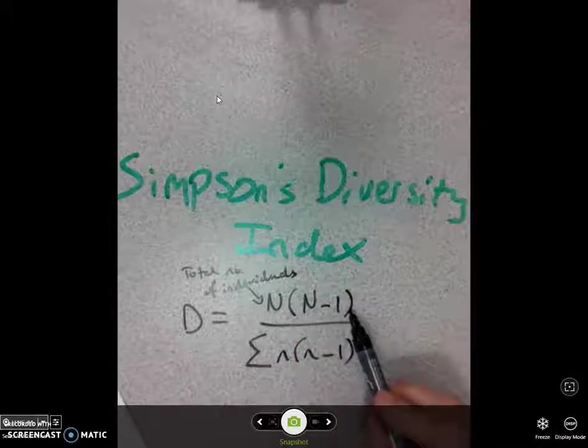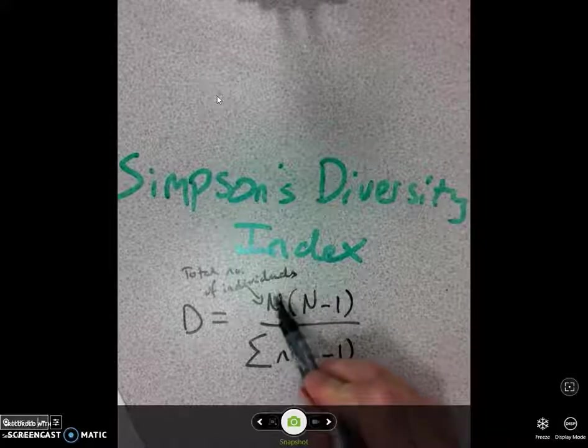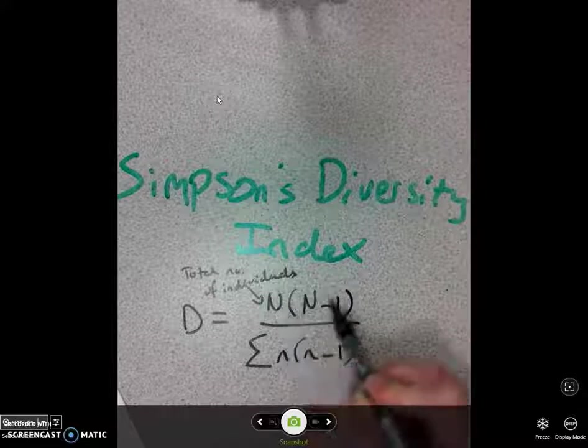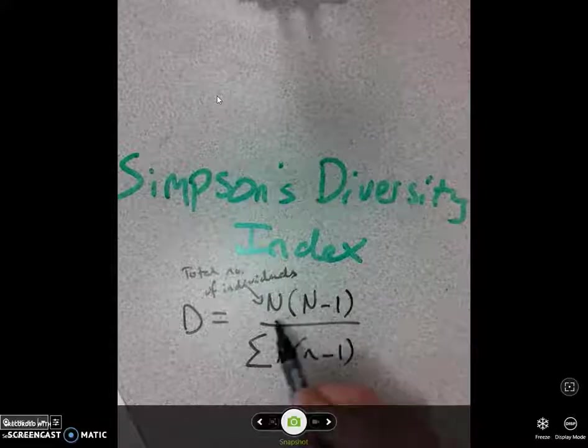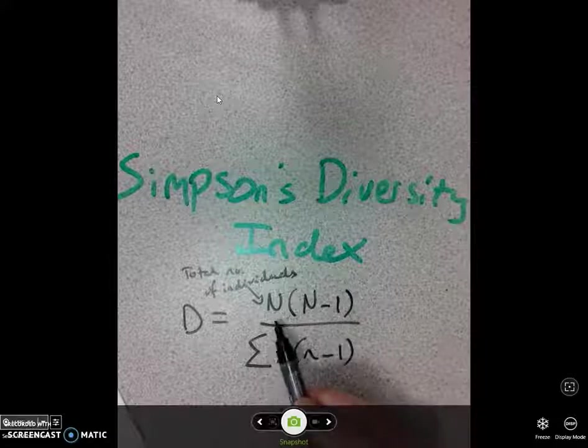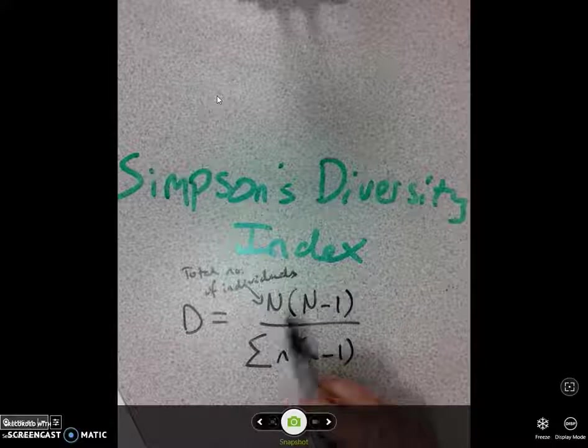Now what does N minus 1 mean? Well, let's just imagine this had a number here. If this were, for example, 83, then N minus 1 would be 82. The brackets, the factors outside it, just remember your GCSE maths, that means you do this number times by that number. So in the example I just gave it would be 83 times by 82.